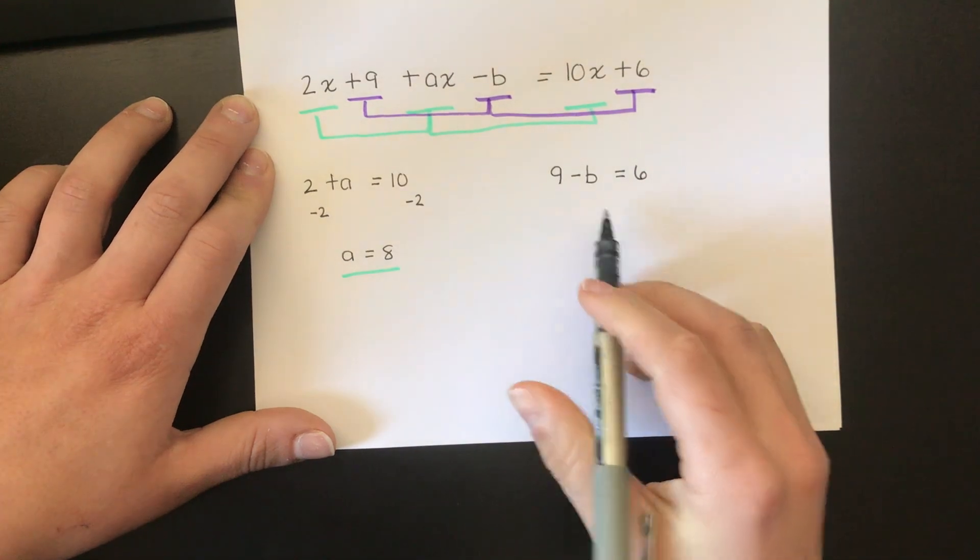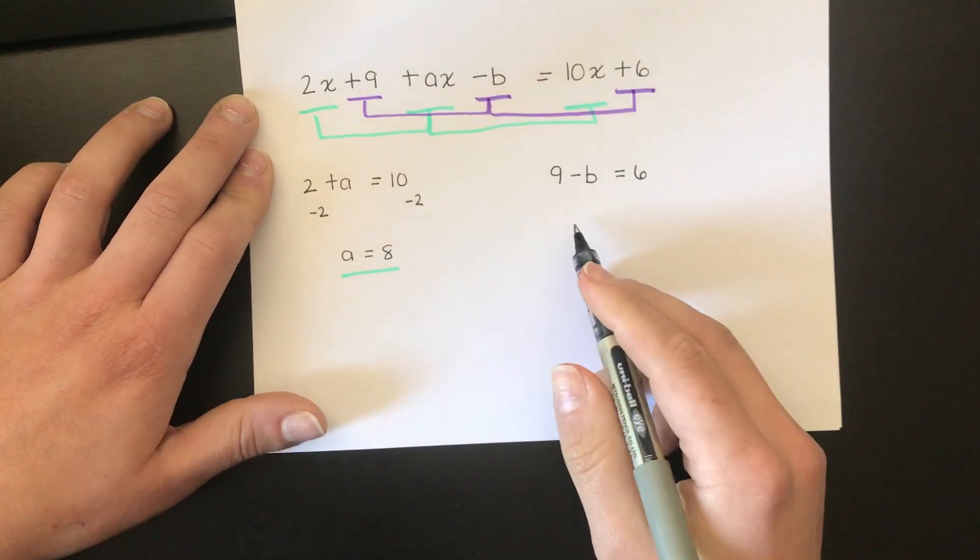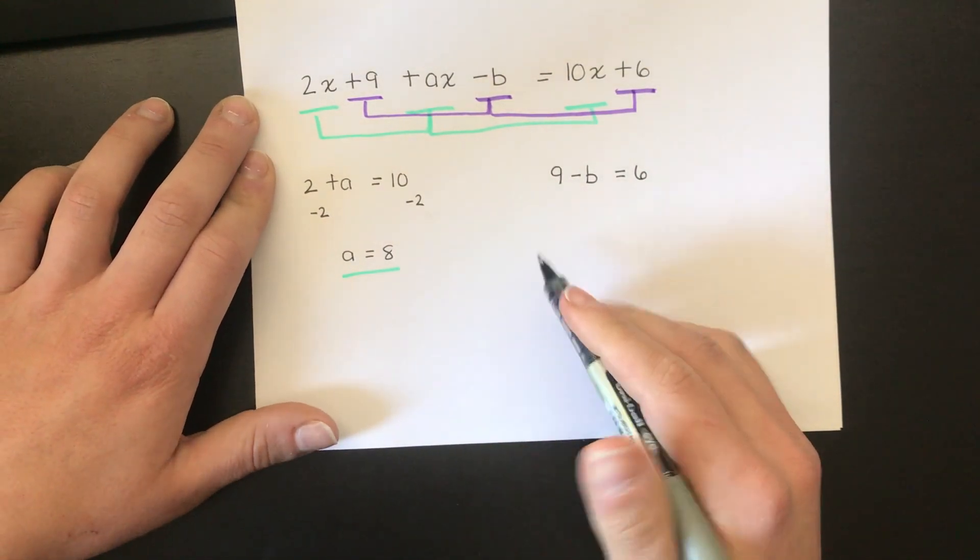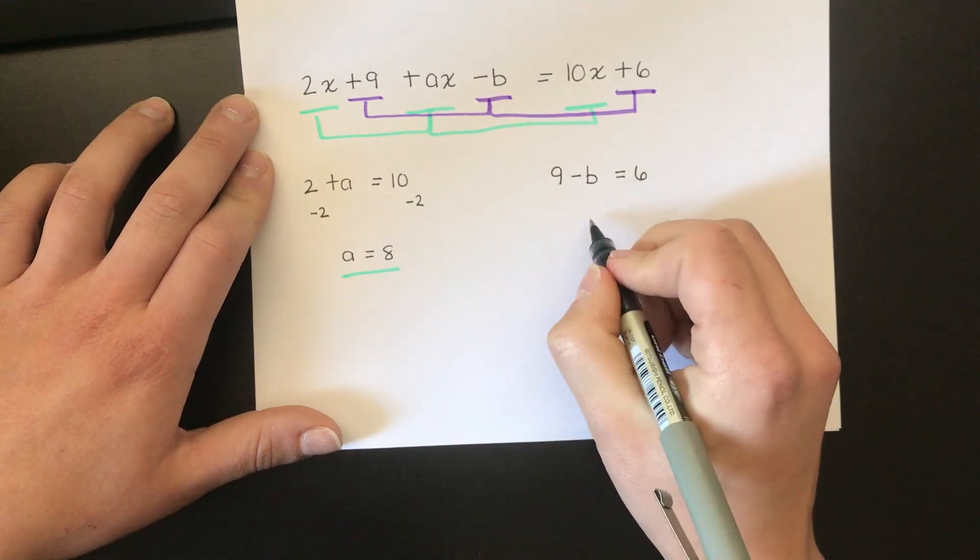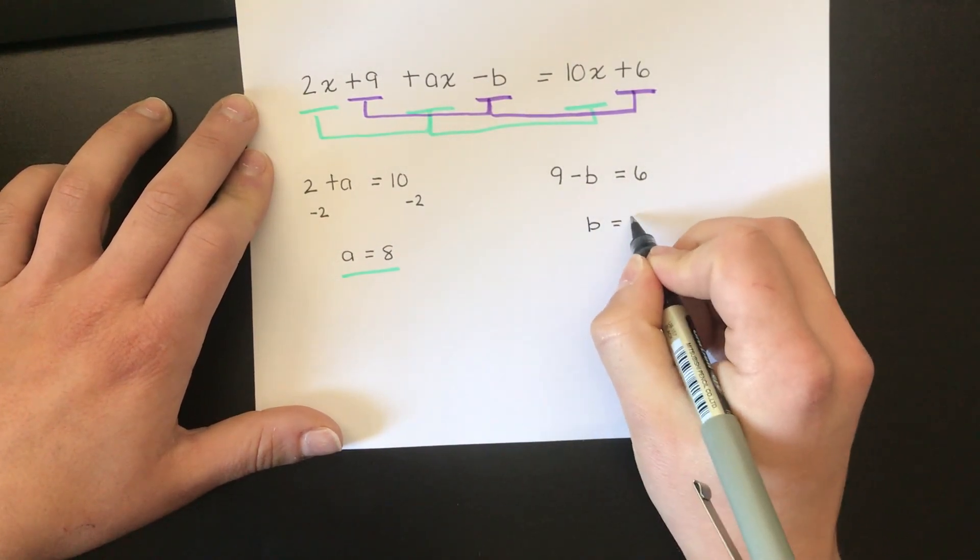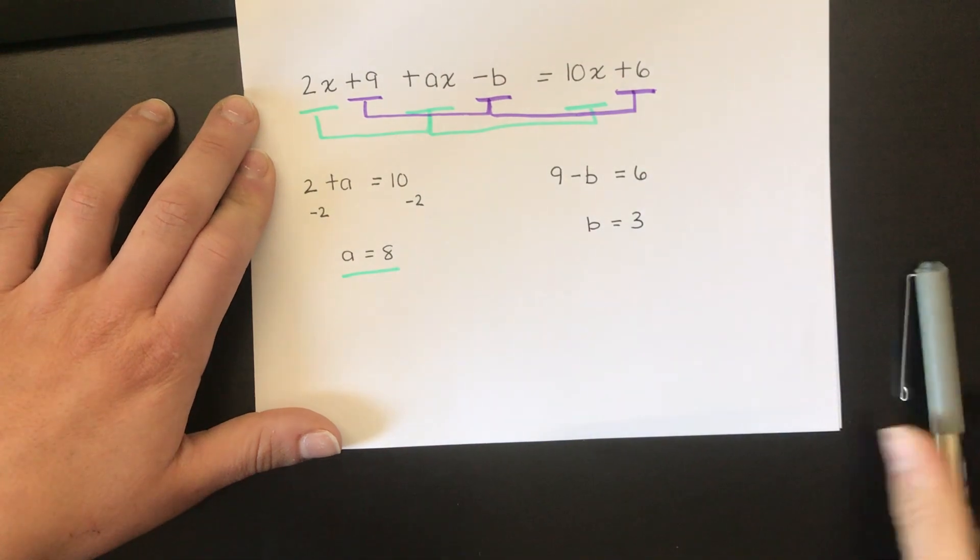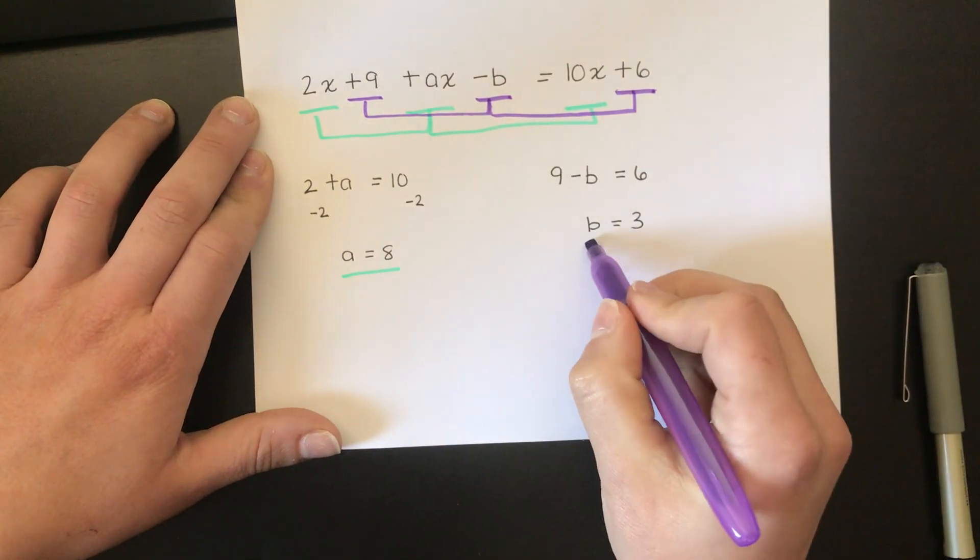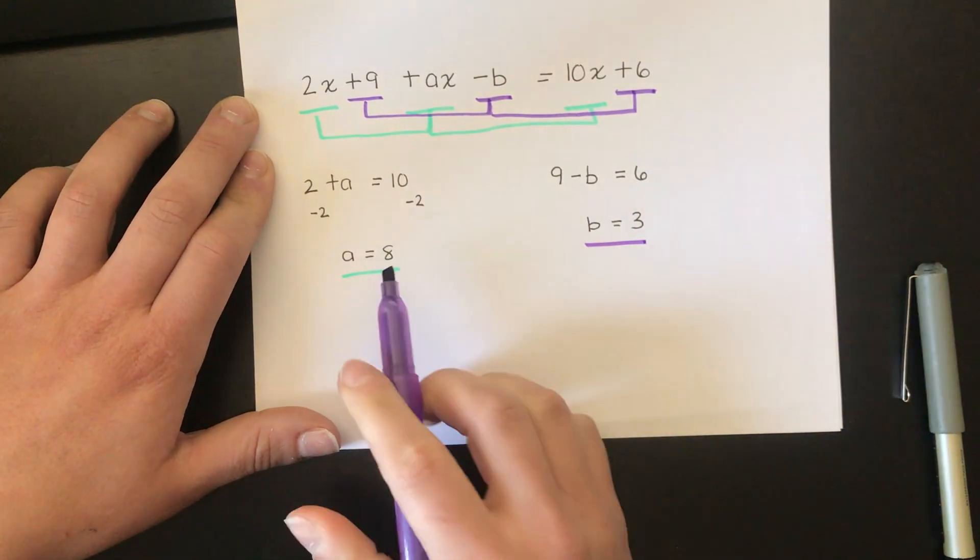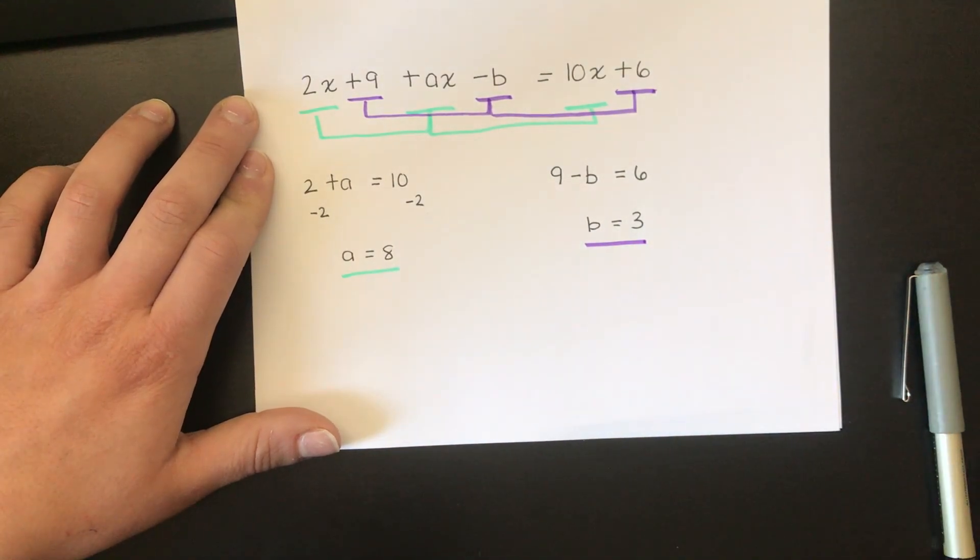Now I'm going to solve this. I want to find out how much b is. There's more than one way I can do this, but I can see the answer. It says 9 take away something is 6, so 9 take away 3 is 6. b must be equal to 3. There's my other answer. a is 8, b is 3. Done.